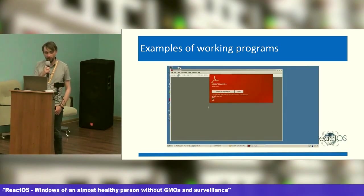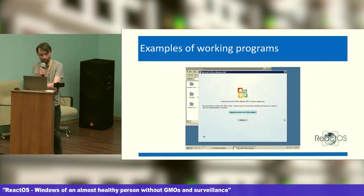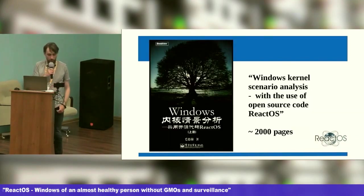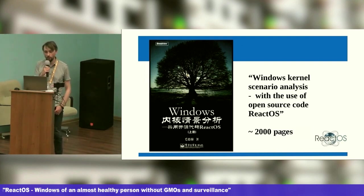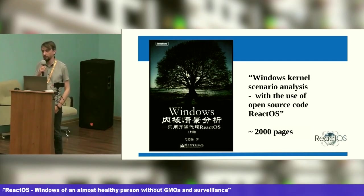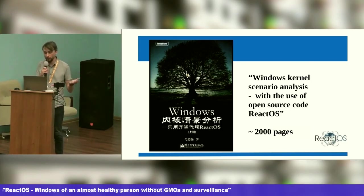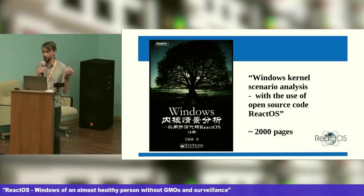There are a couple more points to highlight. ReactOS is mentioned not only in the materials of Moscow State Technical University, but references from other universities can be found on the internet. Moreover, someone interested in studying the structure of Windows wrote a 2,000-page work in Chinese — this book can be downloaded, and its ISBN is available. The architecture of Windows is analyzed, but the source code of ReactOS is used as an example — showing how to talk about a closed product without using its illegal code by finding its equivalent. In this case, ReactOS is being used in the opposite direction: not to replace Windows, but to understand how Windows works.